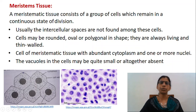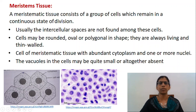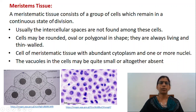Meristematic tissue consists of a group of cells which remain in continuous state of division. Some of the characteristics of meristematic tissue are: they are composed of immature cells which are in a state of division and growth. Usually the intercellular spaces are not formed among these cells. The cells may be rounded, oval or polygonal in shape. They are always living and thin-walled. Each cell of the meristematic tissue possesses abundant cytoplasm and one or more nuclei. The vacuoles in the cells may be quite small or altogether absent.